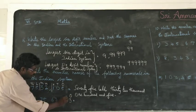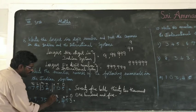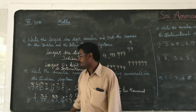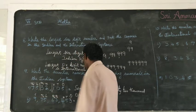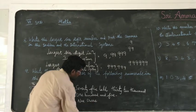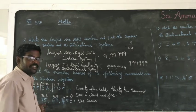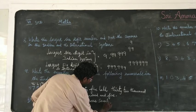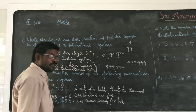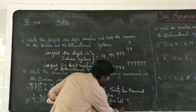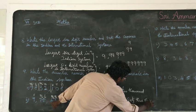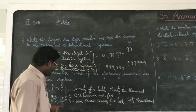Write the place values: ones — 1, tens — 10, hundreds — 100, thousands — 1,000, ten thousands — 10,000. So 9 is in the 4th place. How many lakhs are there? 75 lakhs. The number is 63,453.